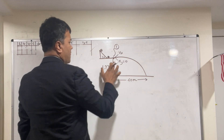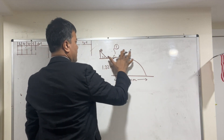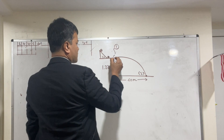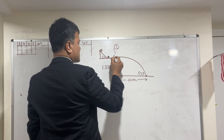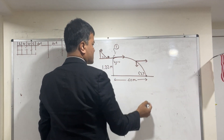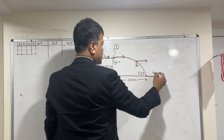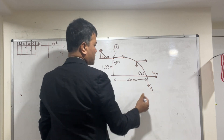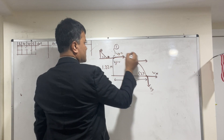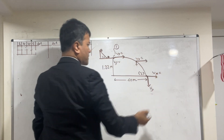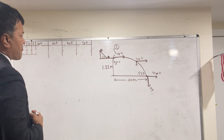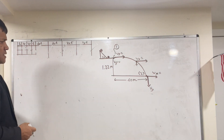At location 1, at the edge of the table, the velocity vector has two components: vx pointing horizontally and vy = 0. At location 2, on the ground, both vx and vy are present. Notice that vy increases as the ball falls, while vx at location 1 equals vx at location 2 — meaning vx is constant throughout the flight.